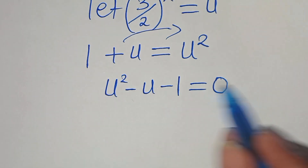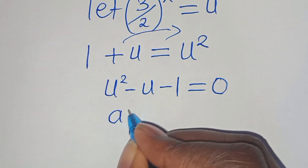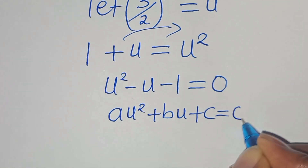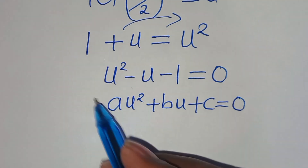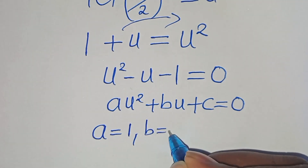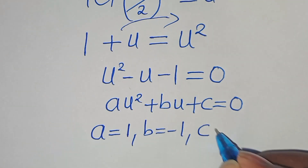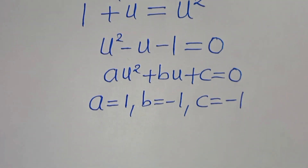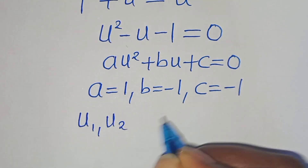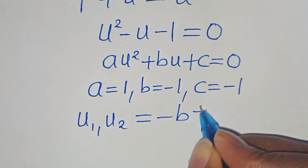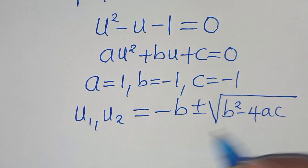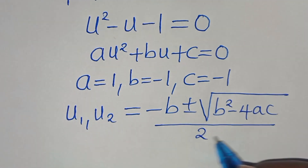We now have a quadratic equation of the form a·u² + b·u + c = 0. From this quadratic equation, a equals 1, b equals negative 1, and c equals negative 1. We solve for u₁ and u₂ by applying the quadratic formula: negative b plus or minus the square root of b² minus 4ac, all divided by 2a.